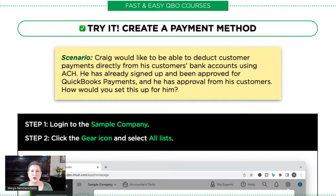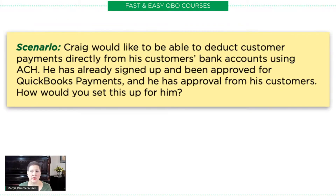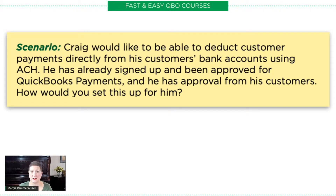Today we're going to be talking about payment methods. Payment methods are the types of payments that your customers accept. Today's scenario is: Craig would like to be able to deduct customer payments directly from his customers' bank accounts using ACH. He has already signed up and been approved for QuickBooks Payments, which is important. I'll talk to you more about that in a little bit, and he has approval from his customers. How would you set this up for him?